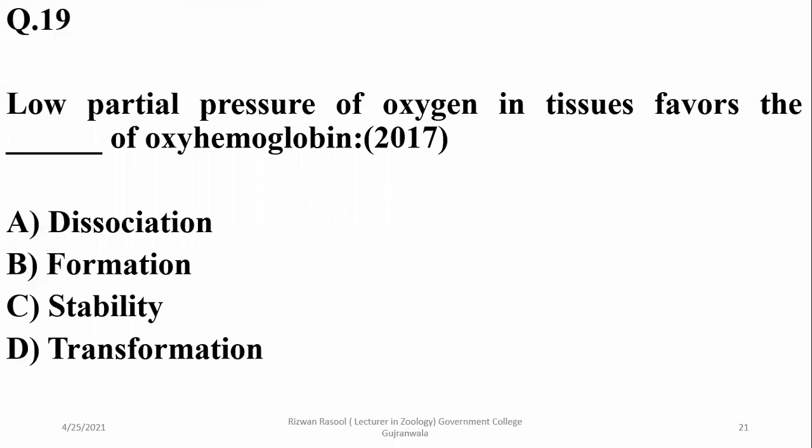Question eighteen: low partial pressure of oxygen in tissues favors the dissociation of oxyhemoglobin — oxygen dissociates from hemoglobin. So alpha is correct.